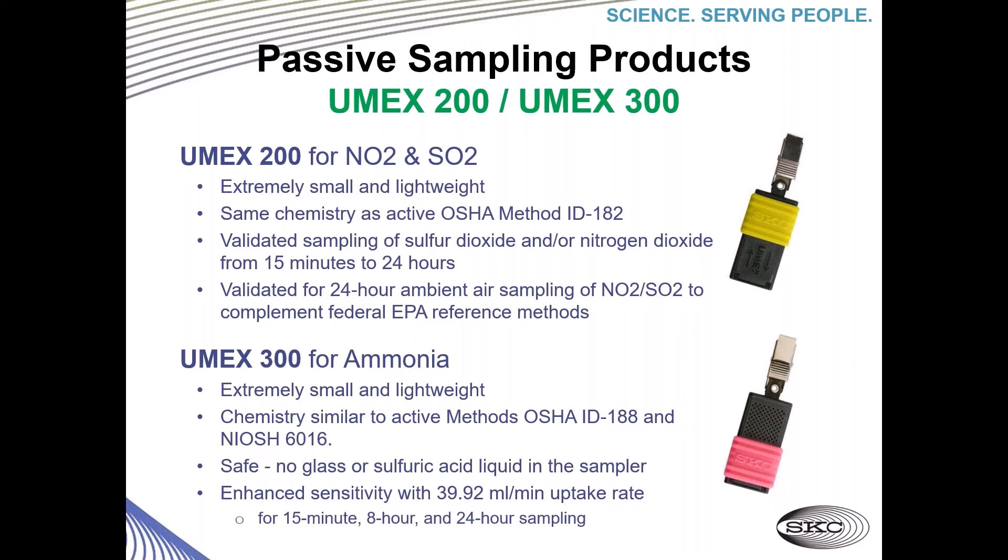Ammonia can be a challenge to work with, and our Umex 300 can take care of that. Same design, with chemistry similar to the active method OSHA ID-188 and the NIOSH 6016 method. One convenience is that it's safe because it doesn't have any glass or sulfuric acid liquid in the sampler as with other methods. It also has enhanced sensitivity with a 39.92 milliliters per minute uptake rate for 15-minute, 8-hour, and 24-hour sampling.